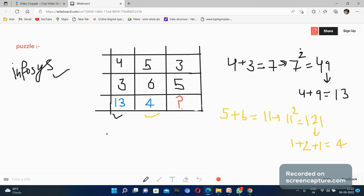In the third line, similarly, we do 3 plus 5, which equals 8. After that, we square it: 8 squared equals 64. When we add 6 plus 4, we get 10.